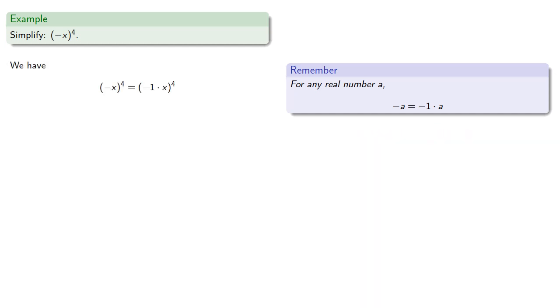So this negative x to the fourth is really the power of a product. For the power of a product, each factor gets the power. In this case, because negative one to any power is one or negative one, depending on whether the power is even or odd, we'll go ahead and evaluate that. Negative one to the fourth is just one, and so our final answer is x to the fourth.